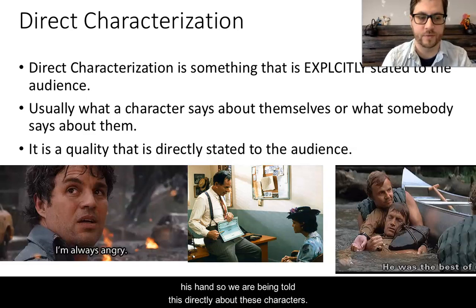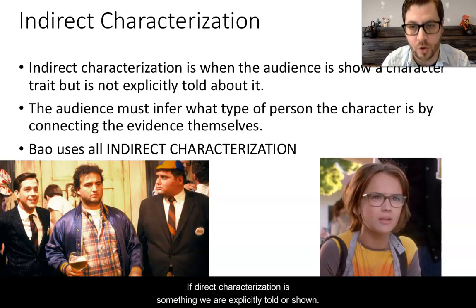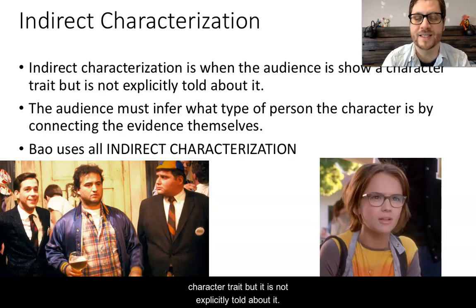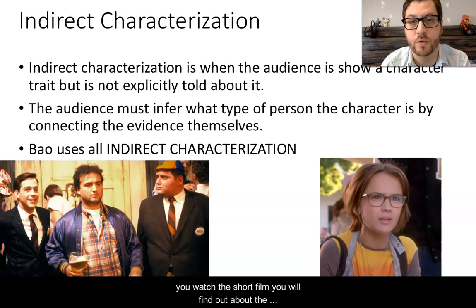Next up we have indirect characterization. If direct characterization is something we are explicitly told or shown, indirect characterization is when the audience is shown a character trait but is not explicitly told about it. The audience must infer what type of person the character is by connecting the evidence themselves. The film Bao uses almost exclusively indirect characterization — as you watch the short film you will find out about the characters, their traits, their motivations, their goals, their attitudes almost solely from what is being shown to you. No one is going to say anything.